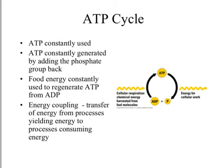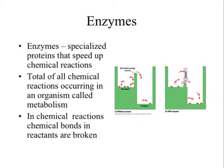Food energy is constantly being used to regenerate ATP through cellular respiration. When energy is released and ADP is the result, cellular respiration puts that phosphate group back onto the ADP so it turns back into ATP and can go out and do more work for the cell. This is what we call energy coupling — or energy recycling. In our next lecture, we'll get into more detail about cellular respiration, and now we're going to jump to the concept of enzymes inside of cells.